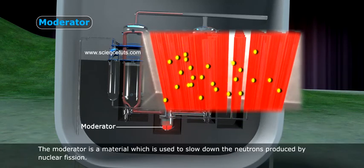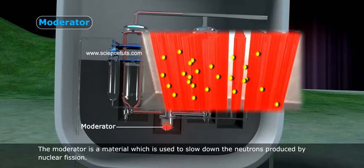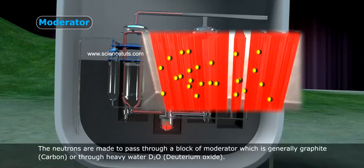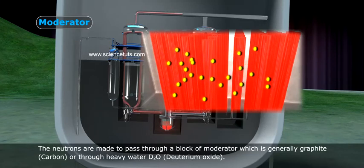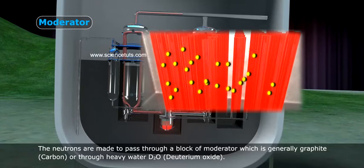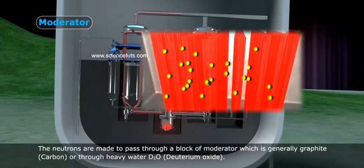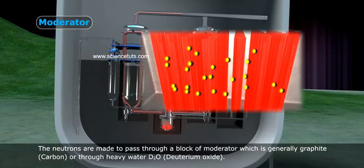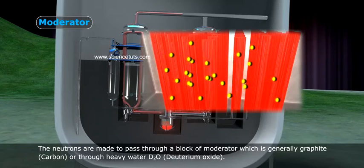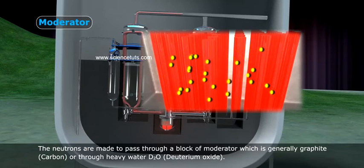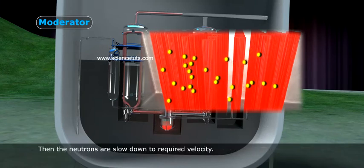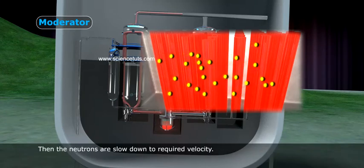The neutrons are made to pass through a block of moderator which is generally graphite (carbon) or through heavy water D₂O (deuterium oxide).